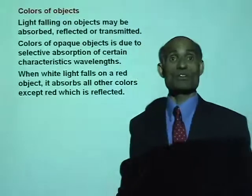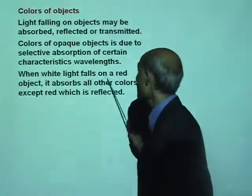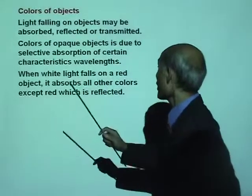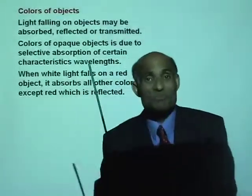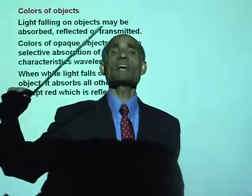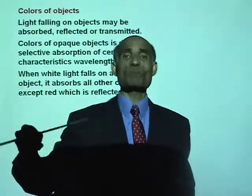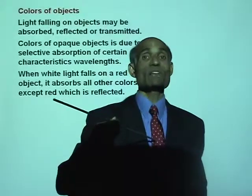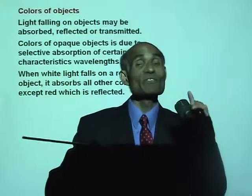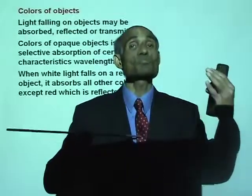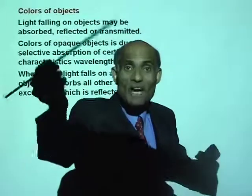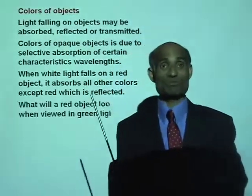Black is the absence of colors. When white light falls on a red object, it absorbs all other colors except red, which is reflected. When white light from the projector falls on my tie, it absorbs all other colors except the wavelength that corresponds to red, which is reflected into the camera so that you can see my tie as red.